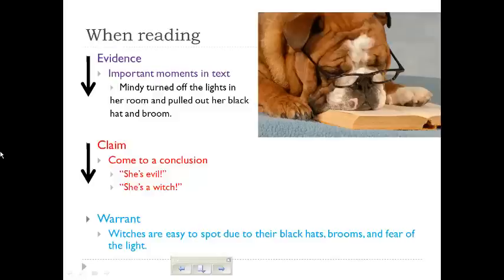But you have to be able to explain why you think she's evil or a witch — maybe she's just trying to conserve energy. So you need a warrant. The warrant you might provide here is: witches are easy to spot due to their black hats, brooms, and fear of the light. Now you can see how evidence comes first, you make a claim, and then support it with your warrant. There are lots of warrants you could use, so you want to make sure you really explain in your writing how you came to the conclusion that you made.